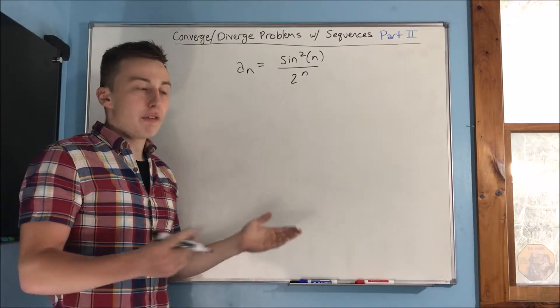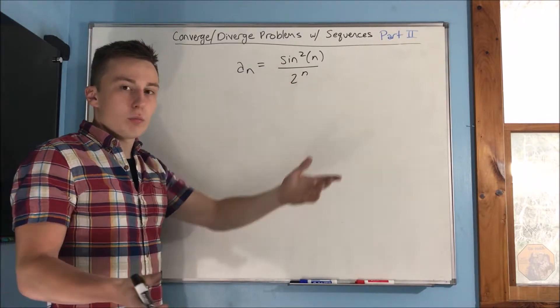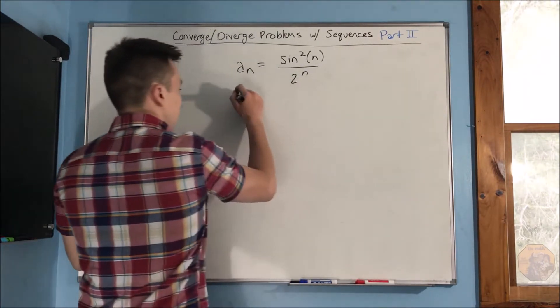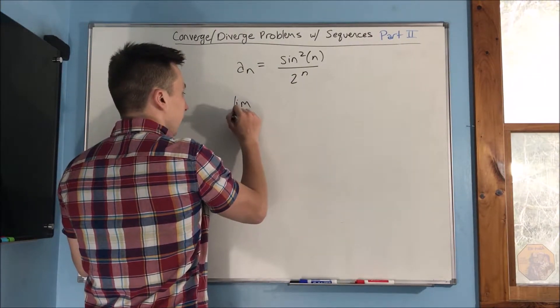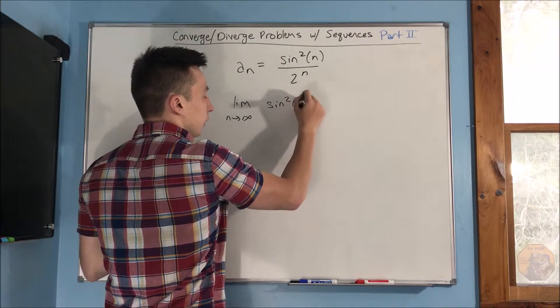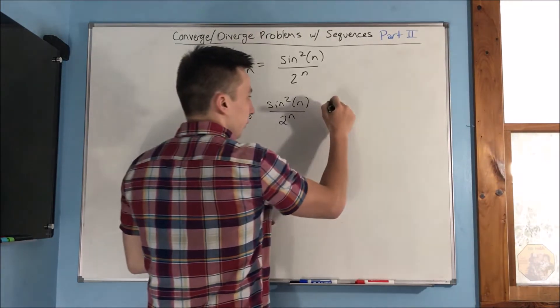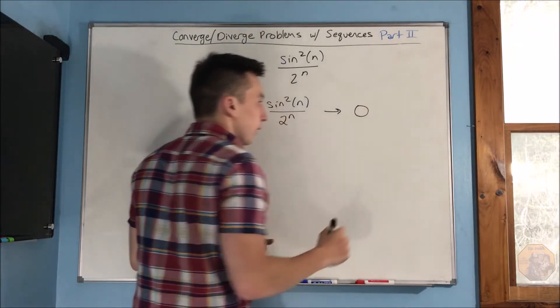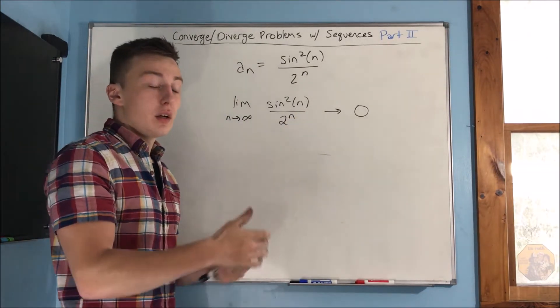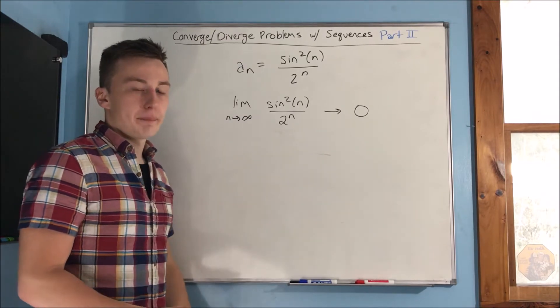So if we have a very small number from 0 to 1 over an infinitely large number, well, that's just going to be 0, right? So if you take the limit as n approaches infinity of sine squared n over 2 to the n, you'll just get 0. We know that that is 0 because our denominator is just becoming infinitely big. So that means this fraction goes to 0.